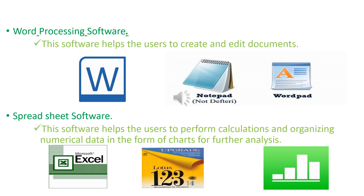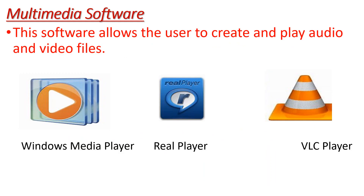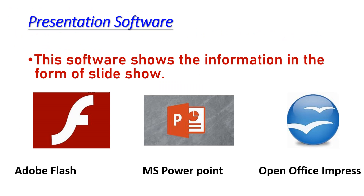Multimedia software allows the user to create and play audio and video files. Examples are Windows Media Player, Real Player and VLC Player. The film industry uses this software for audio-video editing, sound effects, graphics and many more. Presentation software shows information in the form of a slideshow. Examples are Adobe Flash, MS PowerPoint and OpenOffice Impress. Presentation software is now widely used for teaching, and this video was also made in MS PowerPoint.